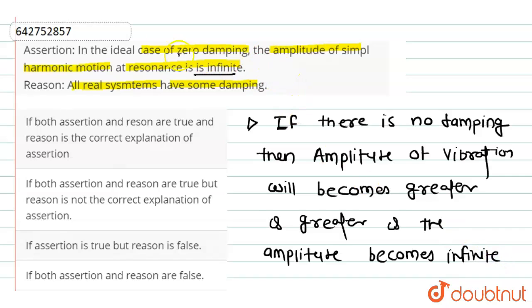It means the statement of assertion is true because in the ideal case of zero damping, the amplitude of simple harmonic motion at resonance will become infinite.